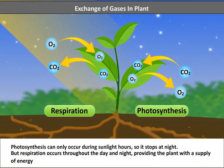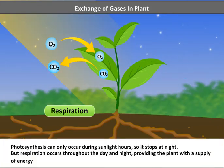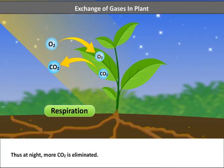Photosynthesis can only occur during sunlight hours, so it stops at night. But respiration occurs throughout the day and night, providing the plant with a supply of energy. Thus, at night, more CO2 is eliminated.